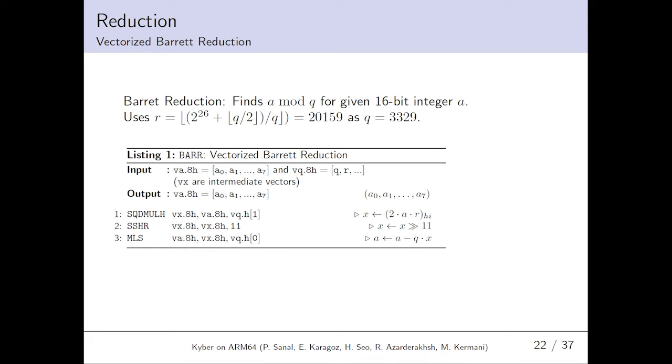Vectorized Barrett Reduction. For a given 16-bit integer A, Barrett Reduction computes A mod Q. It uses a special constant value R, 20159. In our implementation, the numbers are filled in the vector via holding 16-bit lanes. By using three instructions only, we perform the vectorized Barrett Reduction.